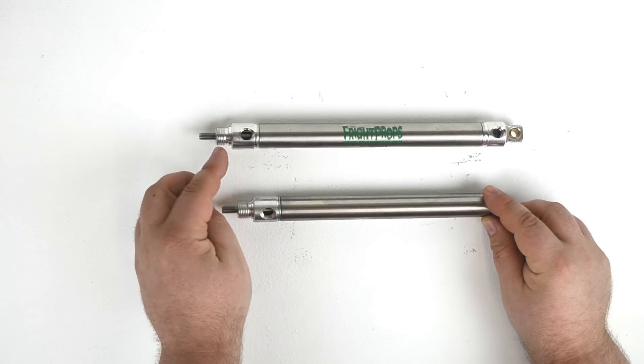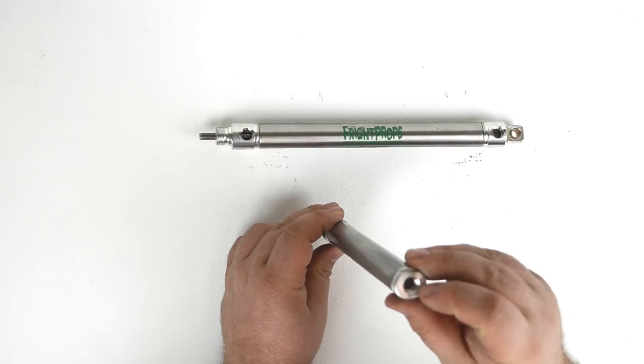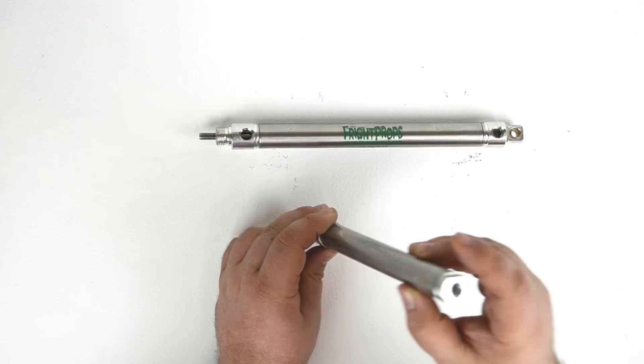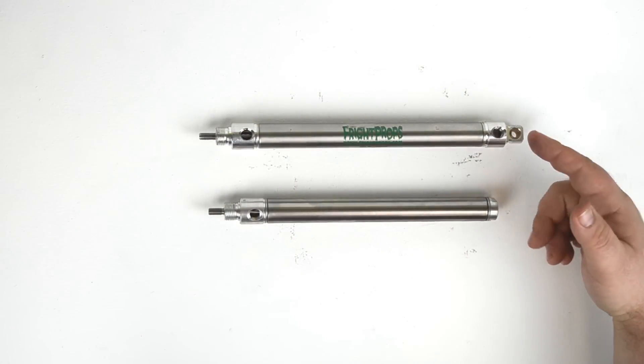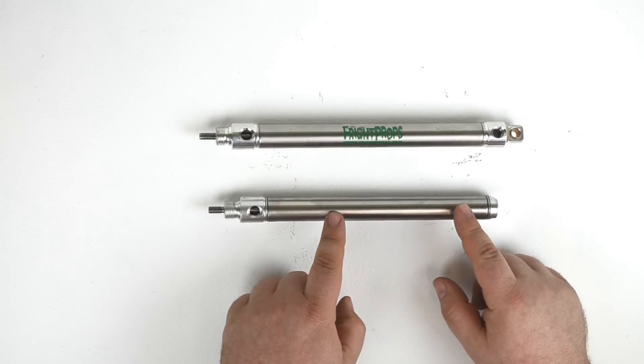It has one air port in the same position as the double acting universal mount cylinder, and the other air port is located on the tail of the cylinder. Functionally, they're identical. They just offer different mounting opportunities, so depending on your application, you might find this beneficial.